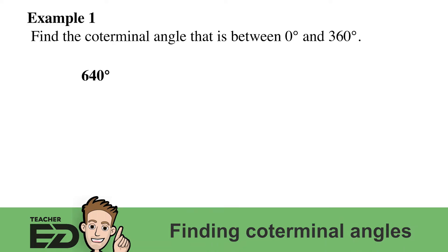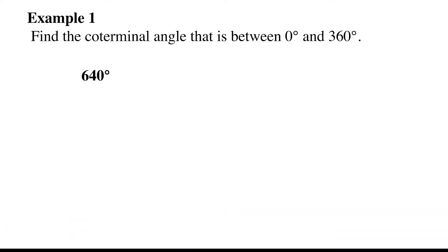Let's find the coterminal angle of 640 degrees that is between 0 and 360 degrees. We use the formula theta plus or minus 360 times n, where n is the number of rotations, theta is our original angle, and we have plus or minus because sometimes we have negative theta and sometimes we have positive theta.